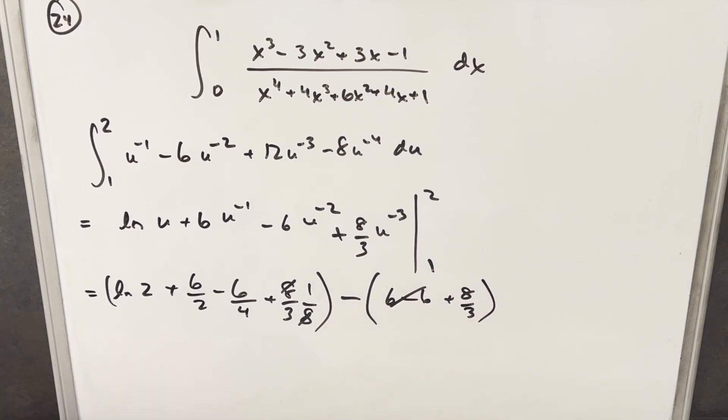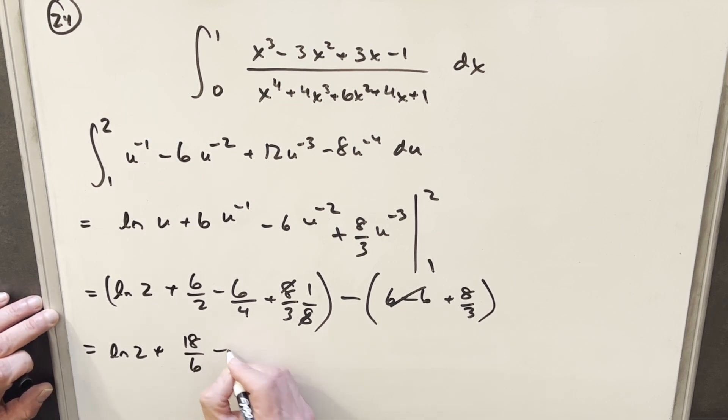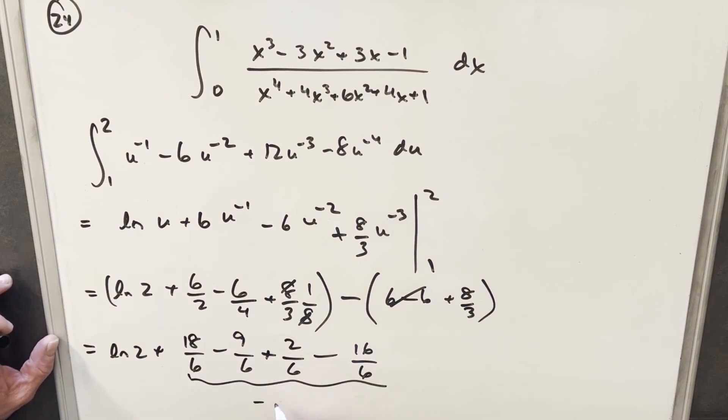Then to finish this off, we're going to need to get, on all these terms, I'm just going to get a common denominator. We have our natural log of 2. For a common denominator, we'll use 6, so we'll do 18 over 6. Then here, we're going to have minus 9 over 6, plus 2 over 6, minus here, we're going to have 16 over 6. When we add all this stuff together, we're just going to have minus 5 over 6. So for our final solution, we're going to have natural log of 2 minus 5 over 6.